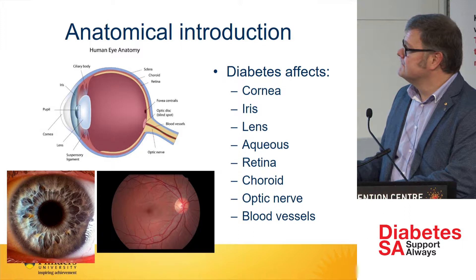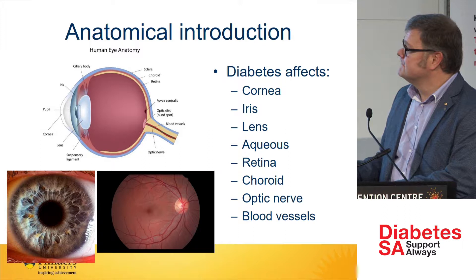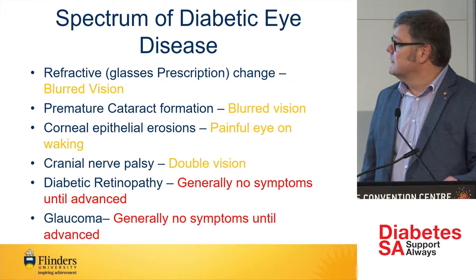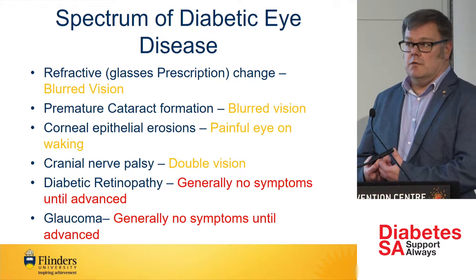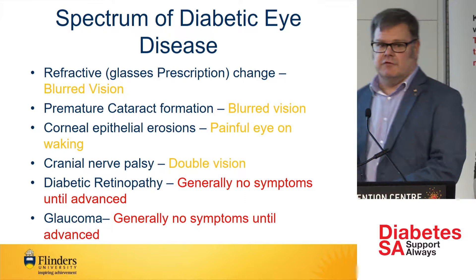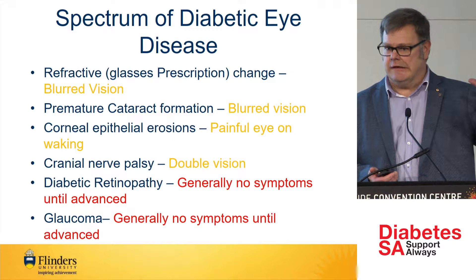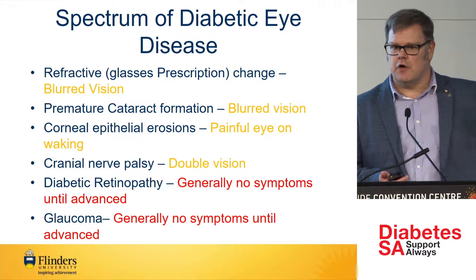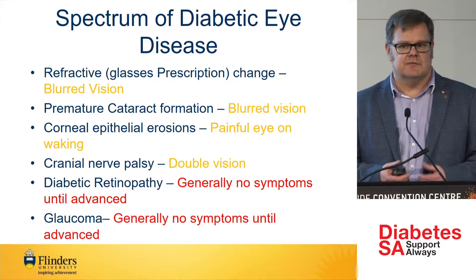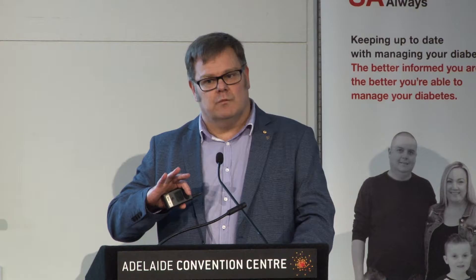With diabetes, things can go wrong with virtually all of them. The spectrum of things that can go wrong includes refractive change — your vision goes blurry. If your blood sugar levels are uncontrolled, you'll go through periods of your vision being indistinct and blurry and other times where it's good, and it can cycle over a period of hours. When a person comes in and says their vision is unreliable, it is actually quite a concern in regards to diabetes.